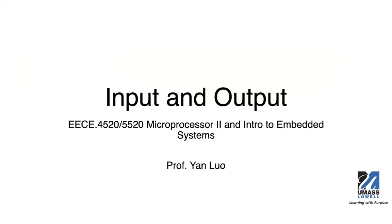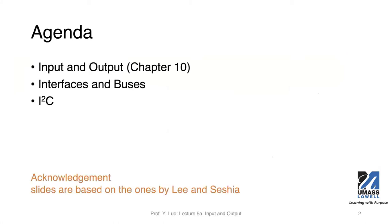We're going to talk about input and output. Input and output are important for any cyber-physical systems because we will need to interact with the physical world through these input and output mechanisms. From the textbook, you can find relevant materials in Chapter 10. The first set of slides are based on Chapter 10. I also have another set of slides that will give you more information on the interfaces and buses.